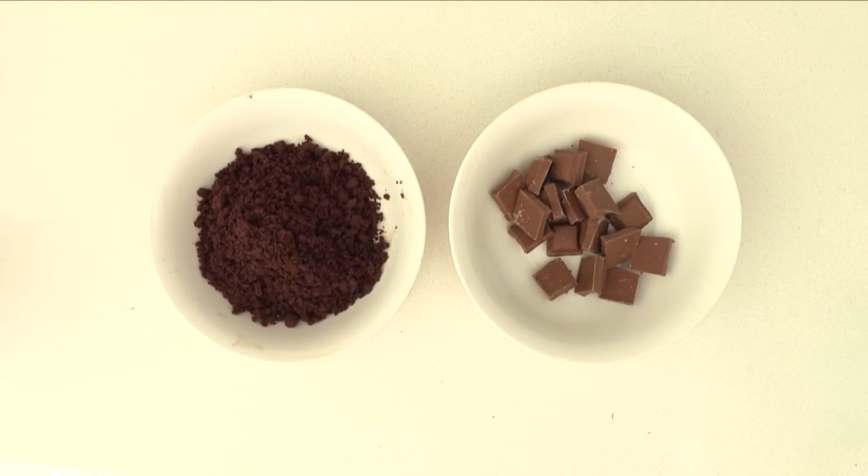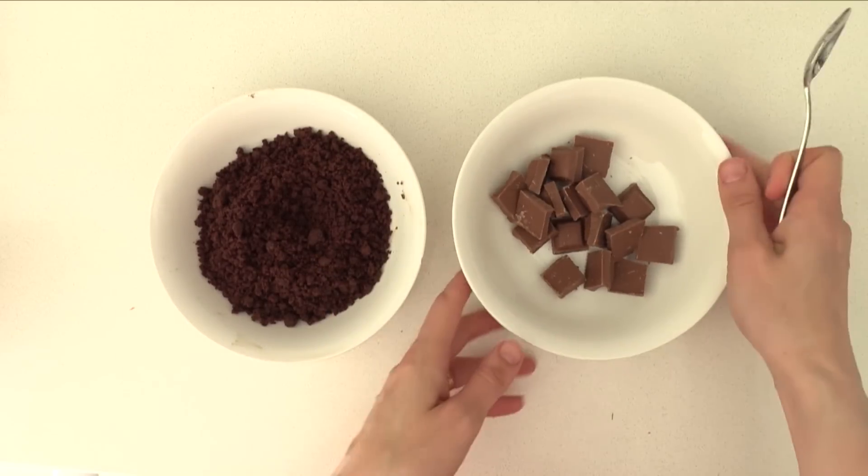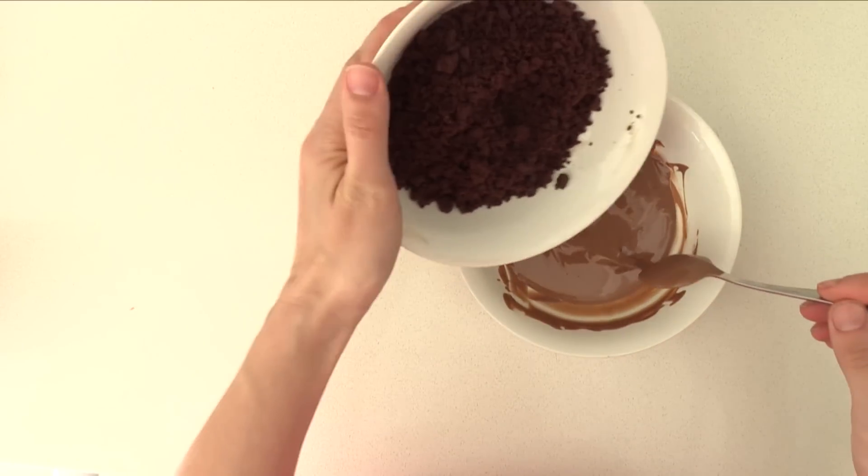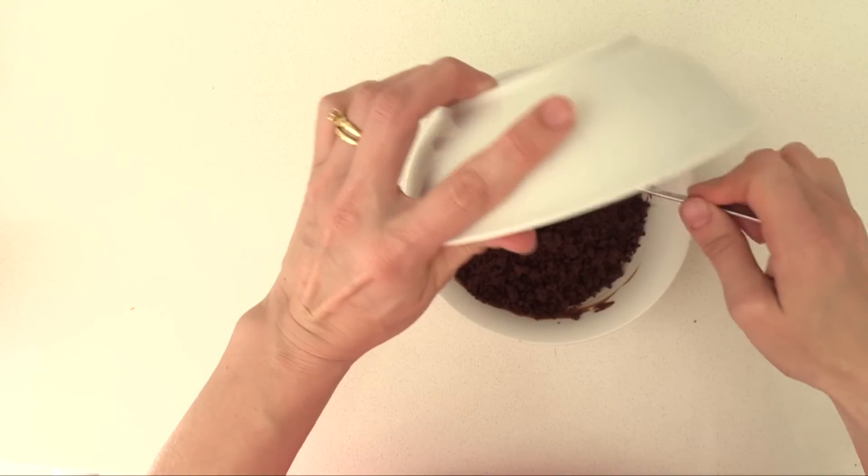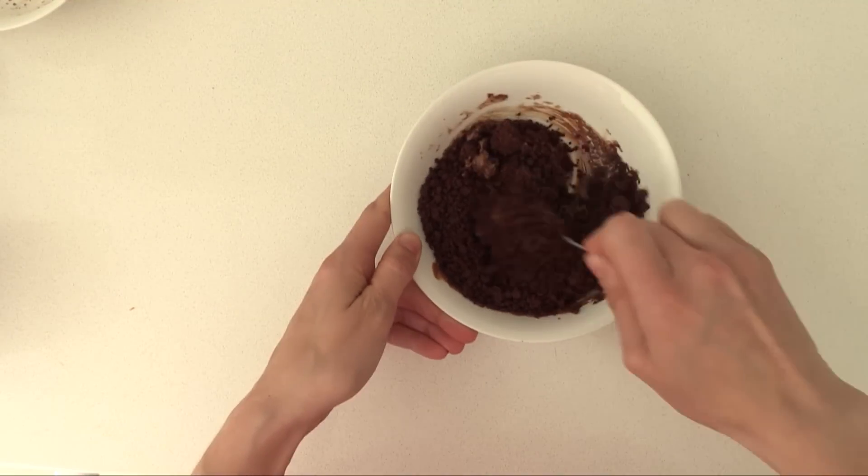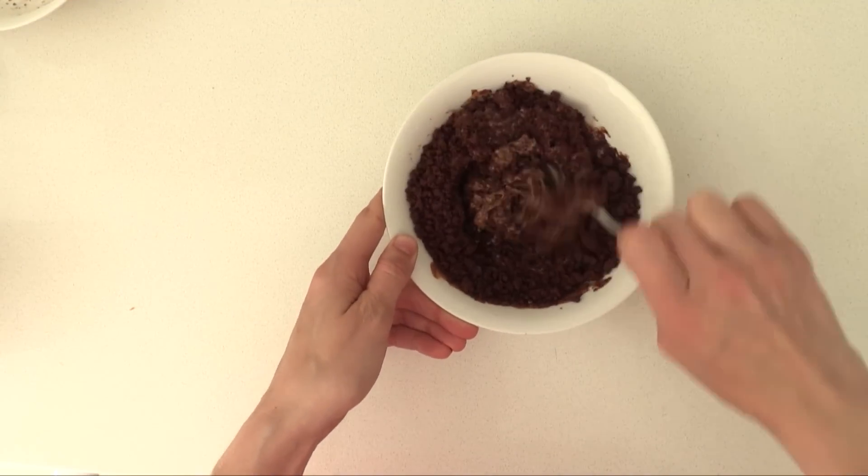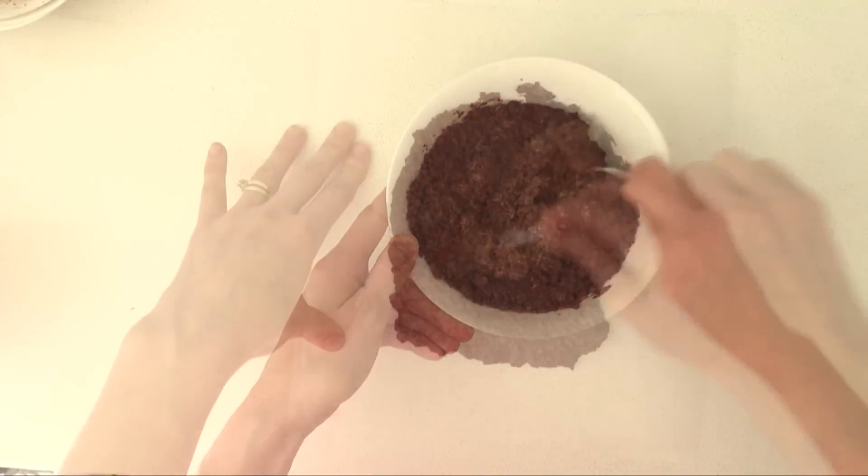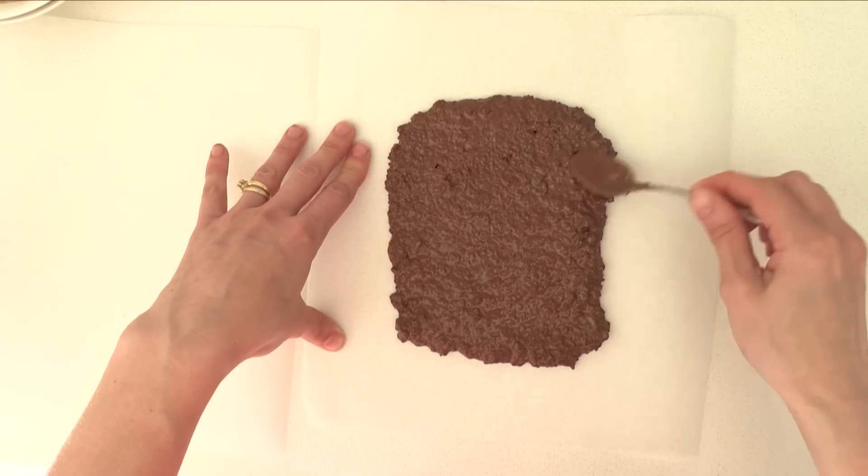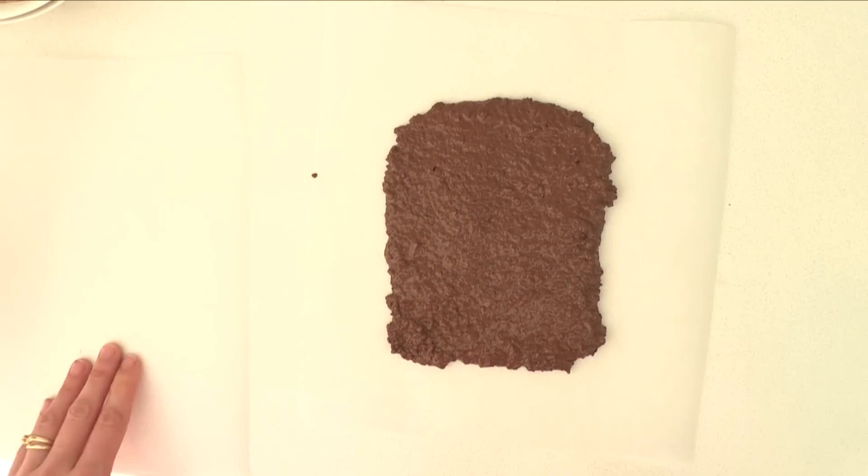For the base of the dessert crush some chocolate biscuits or cookies depending where you are in the world. The recipe that I used for this is on the website but you can use store bought ones if you prefer. Melt your chocolate, we don't need this to be tempered. And then mix through your crumbs into the melted chocolate. Spread that out on some baking paper roughly making it into a rectangle shape big enough for your dessert to sit on.